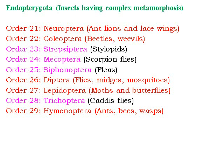Endopterygota — with complete metamorphosis — includes: Diptera (flies and mosquitoes), a specifically important order including beneficial insects; Coleoptera (beetles and weevils); Strepsiptera; Lepidoptera (moths and butterflies), which have a very wide range of pests in agriculture; Siphonaptera (fleas); Neuroptera (lacewings); Trichoptera (caddisflies); and Hymenoptera — bees, ants, and wasps — which include some predaceous insects.